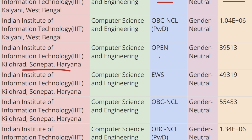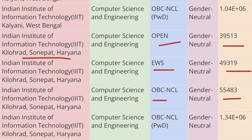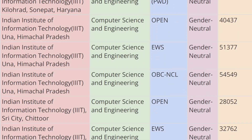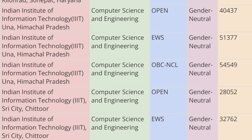Moving ahead, we have IIIT Sonipat, Haryana. As you can see on screen, for Open category the cutoff rank is 39,513, for EWS category the cutoff rank is 49,319, and for OBC-CL category the cutoff rank is 55,483.